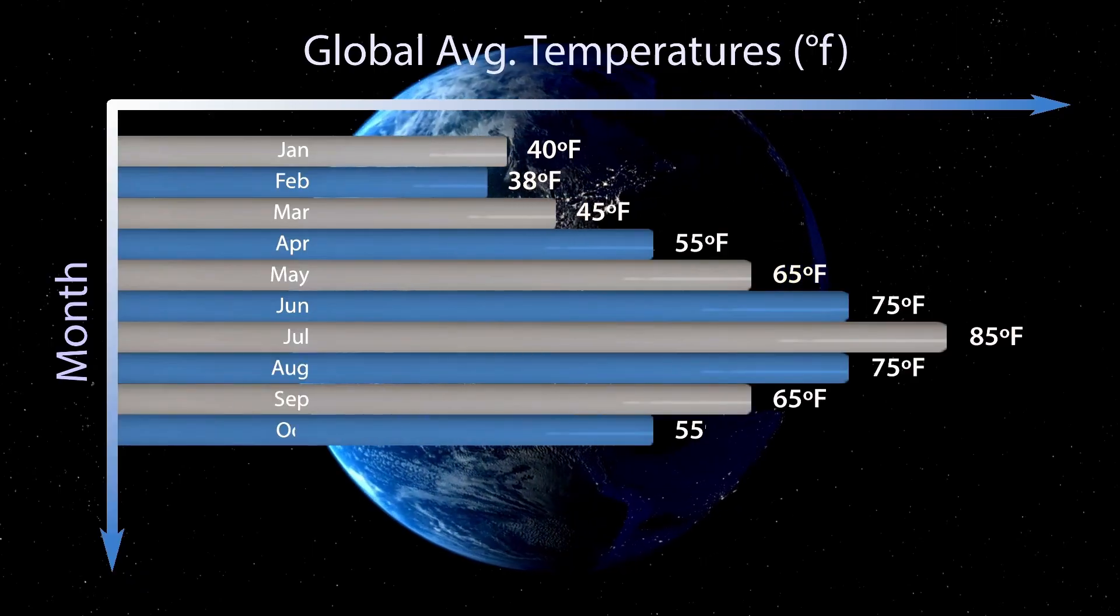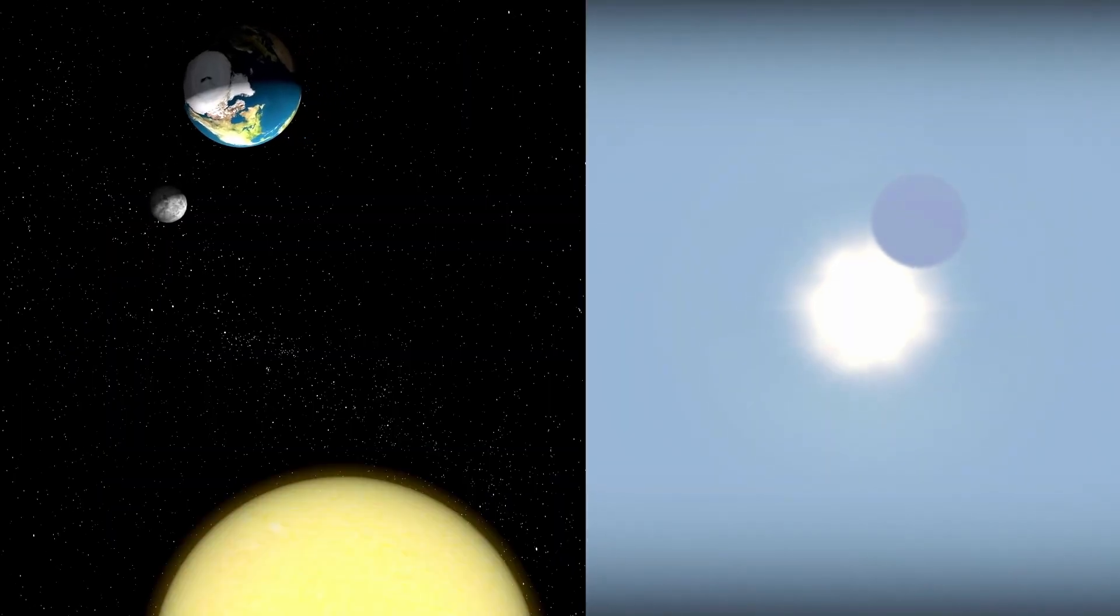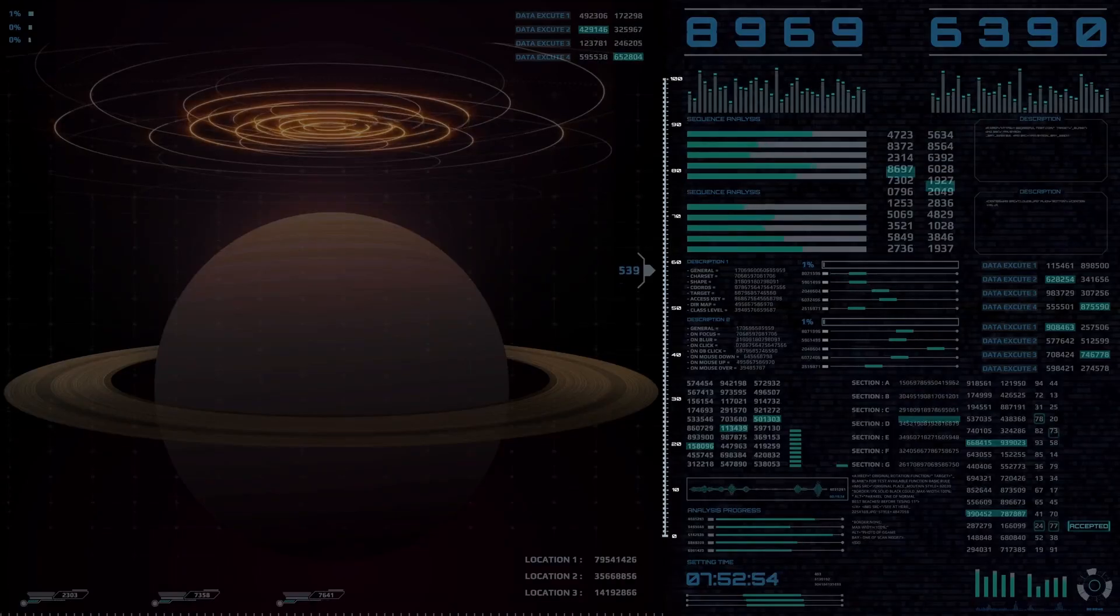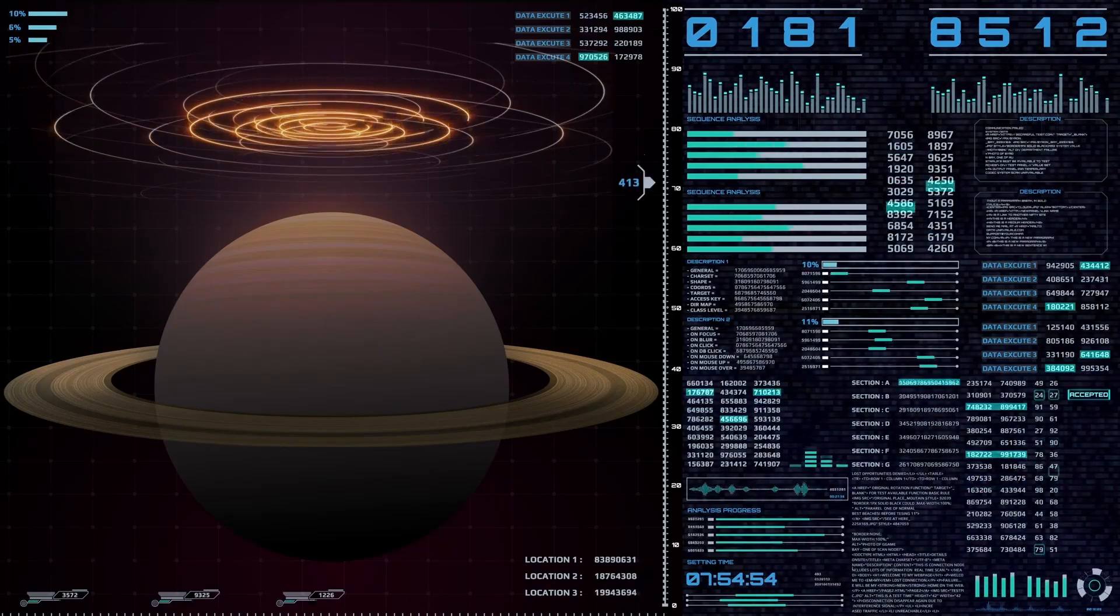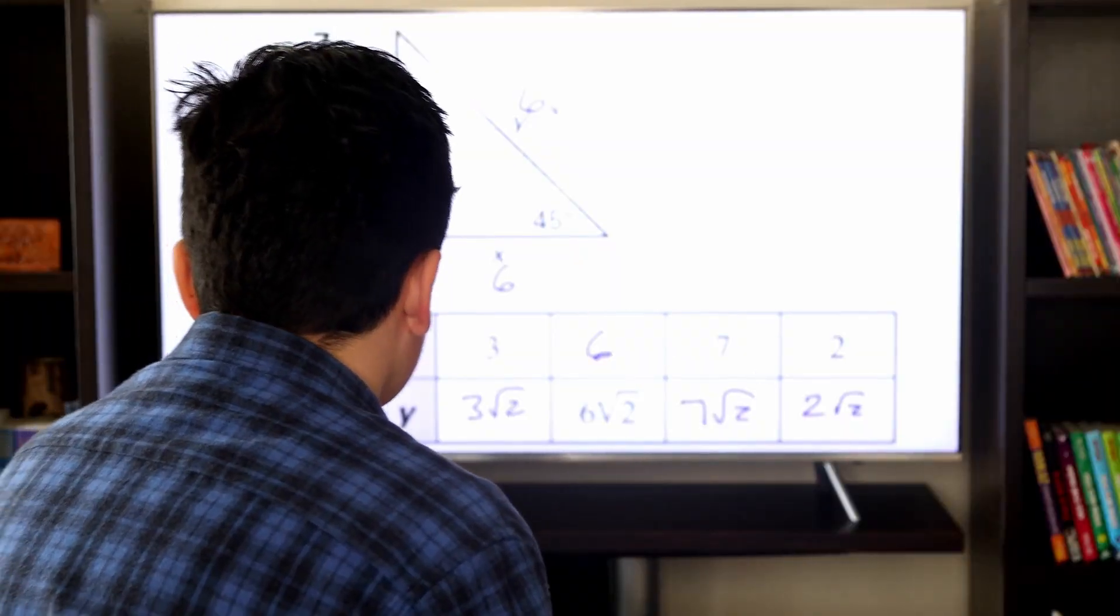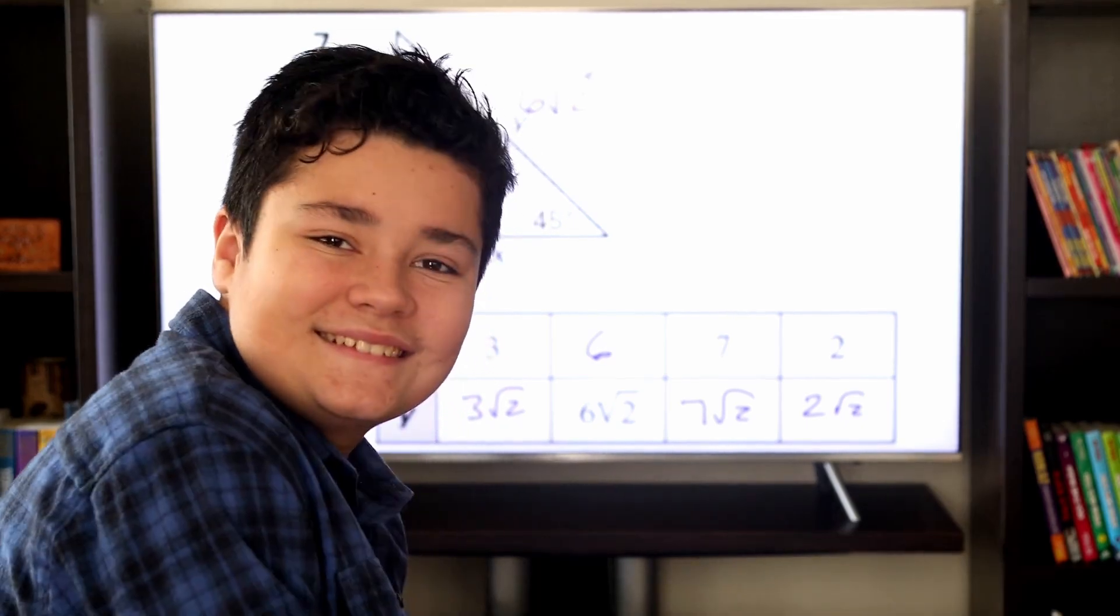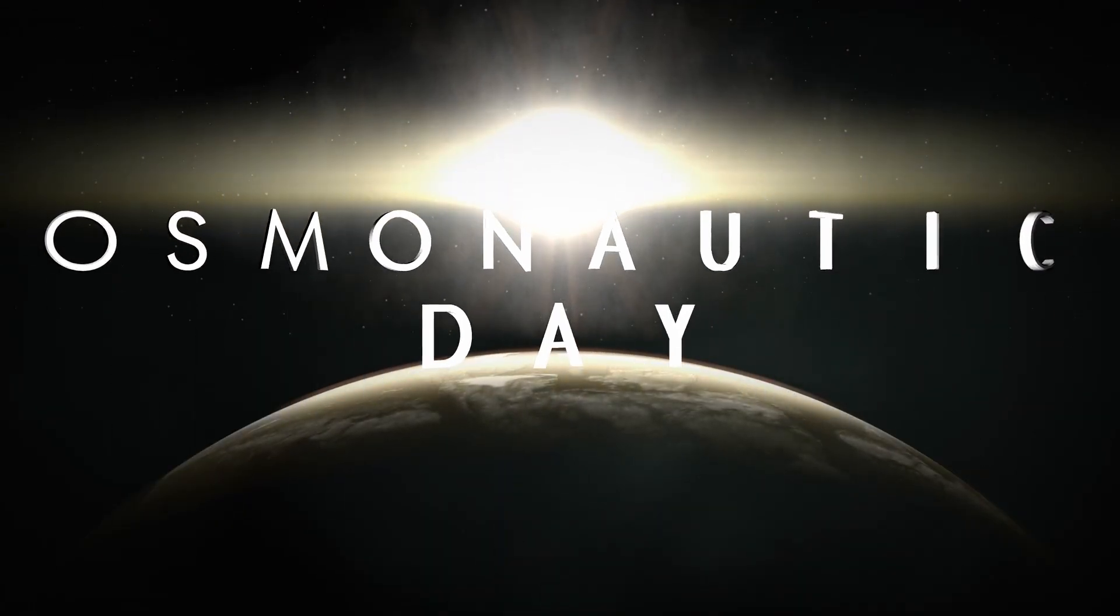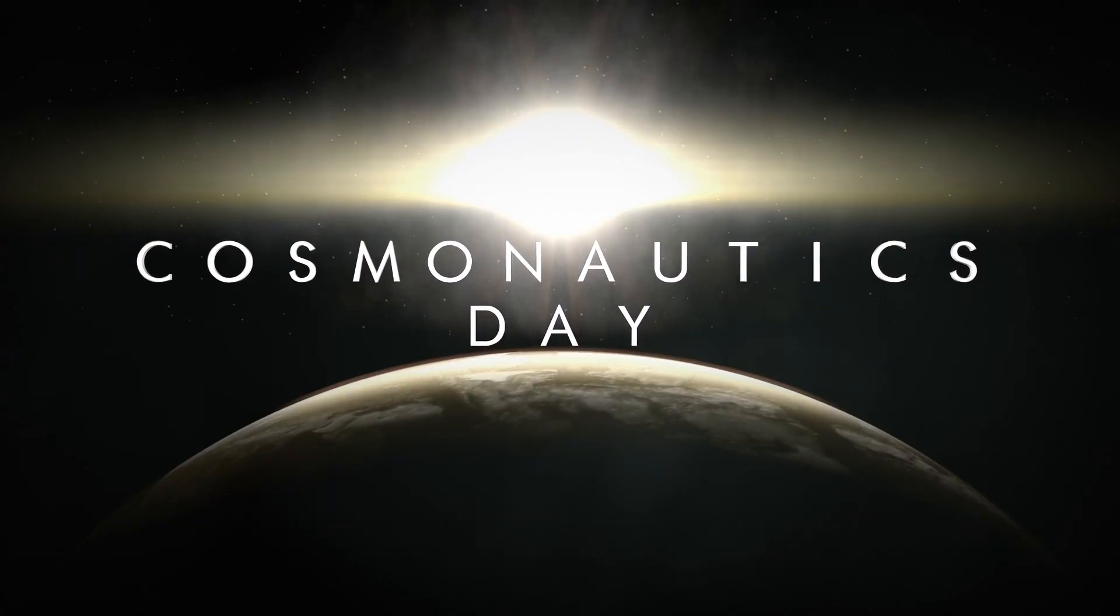Proxima Centauri and other red dwarf stars are among the most productive sources of energy. Their internal convection processes keep them burning for trillions of years, even though they don't produce much energy. For a further four trillion years, Proxima Centauri will continue to be a main sequence star. It is still up for debate, though, whether a red dwarf star like Proxima Centauri is habitable.